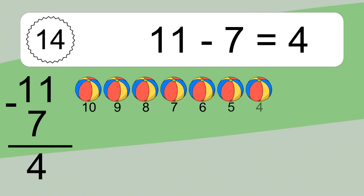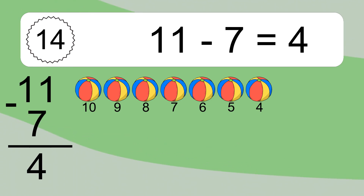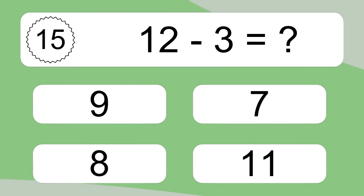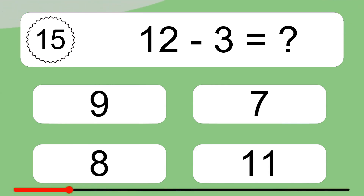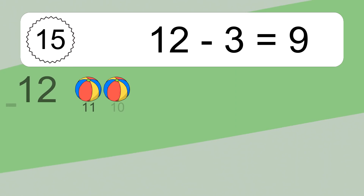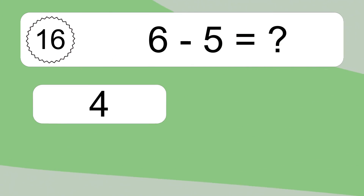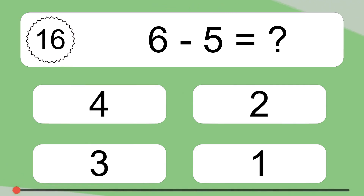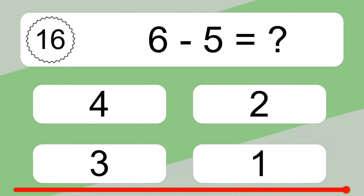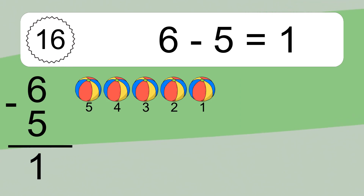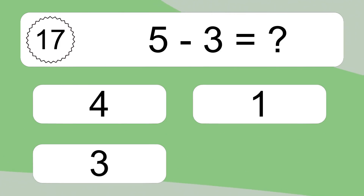11 minus 7 equals 4. Let's count it: 10, 9, 8, 7, 6, 5, 4. 12 minus 3 equals what? 12 minus 3 equals 9. Let's count it: 11, 10, 9. 6 minus 5 equals what? 6 minus 5 equals 1. Let's count it: 5, 4, 3, 2, 1. 5 minus 3 equals what?